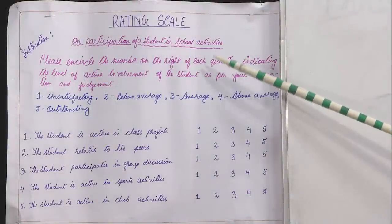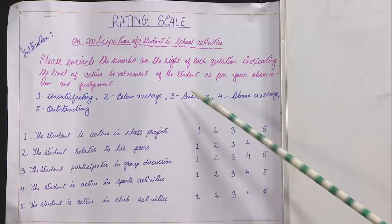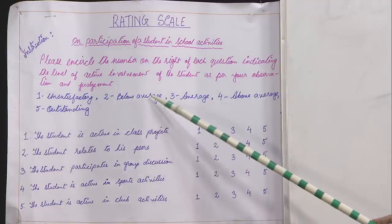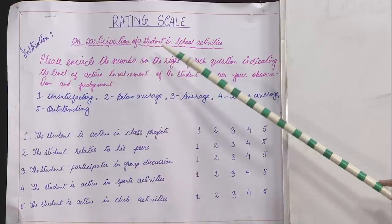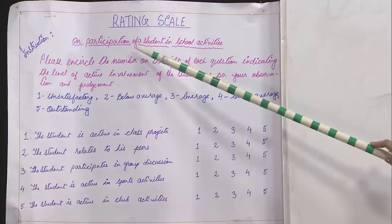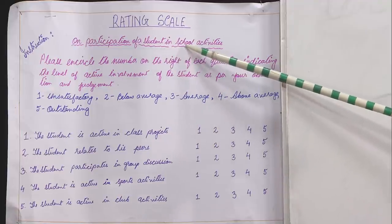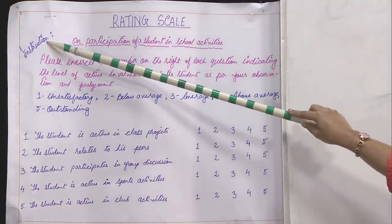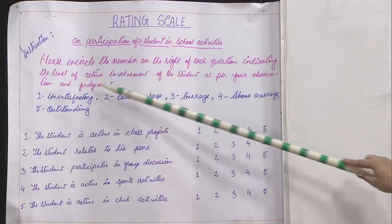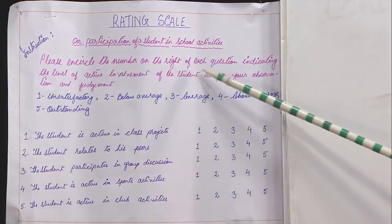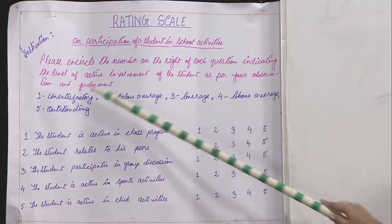This rating scale is prepared as a five-point scale: 5 representing outstanding, 4 representing above average, 3 representing average, 2 representing below average, and 1 representing unsatisfactory behavior. Today, for your convenience, I have prepared a rating scale on a student's participation in classroom activities. For observation of participation in classroom and school activities, I have given certain instructions to the user of this rating scale: please encircle the number on the right of each question indicating the level of active involvement of the student as per your observation and judgment.